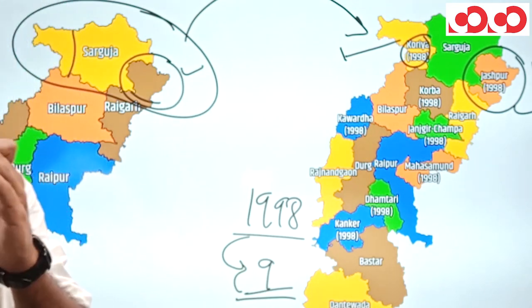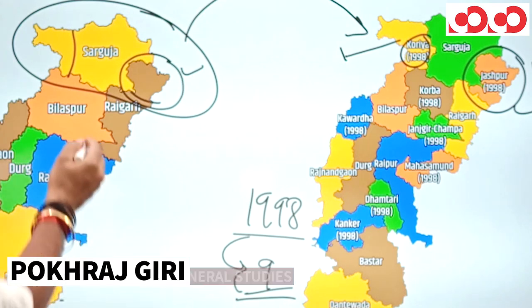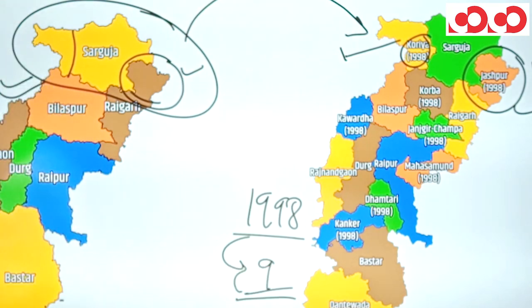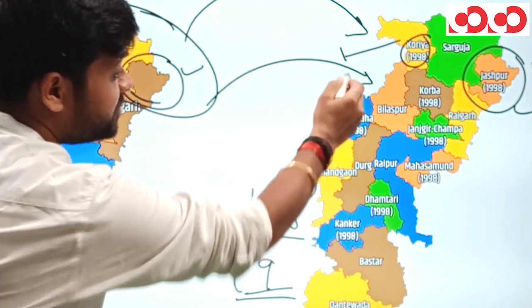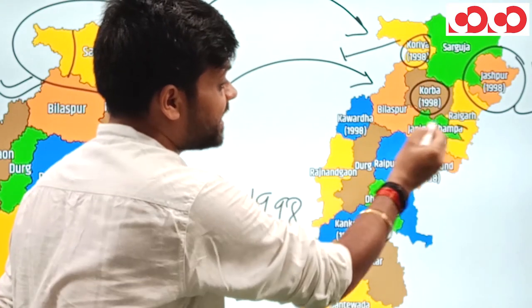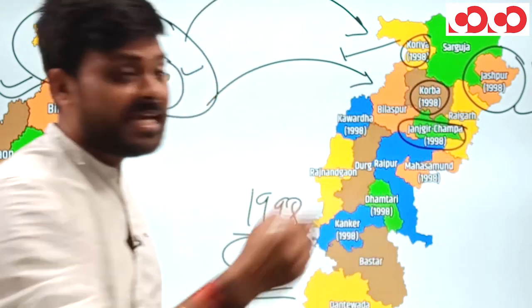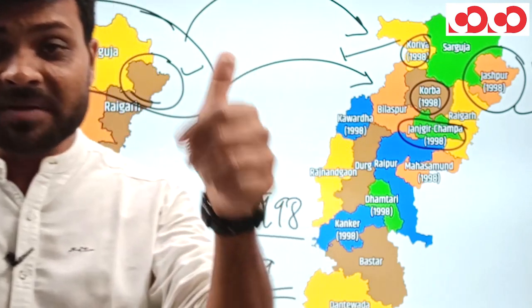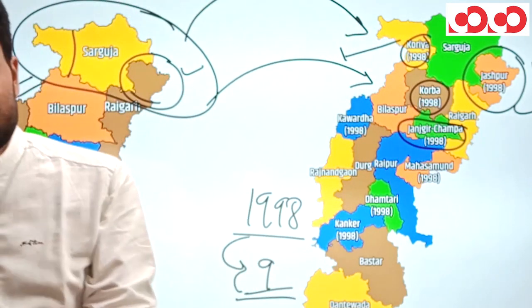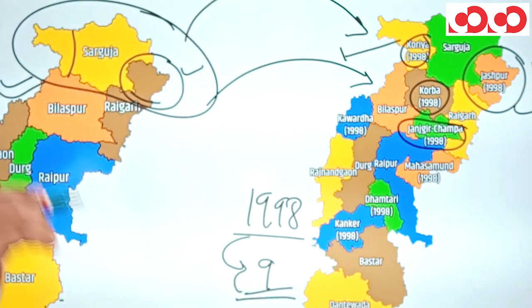In Bilaspur division, two districts were formed in 1998: Korba in the upper part and Janjgir-Champa in the lower part. So from Surguja division came Korea and Jashpur, and from Bilaspur division came Korba and Janjgir-Champa.